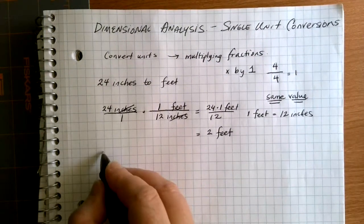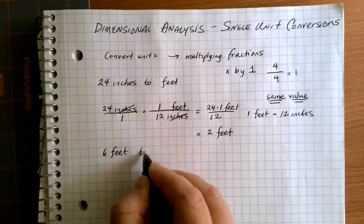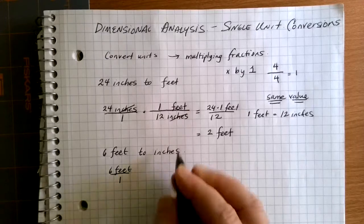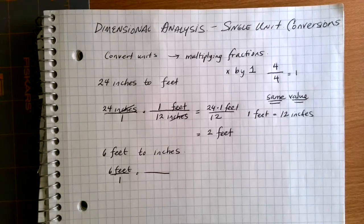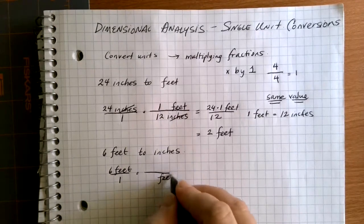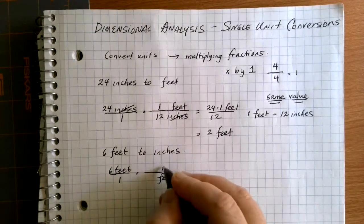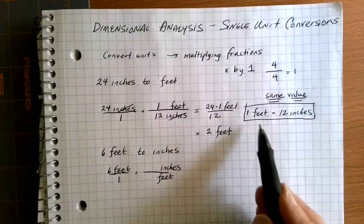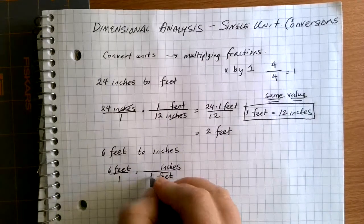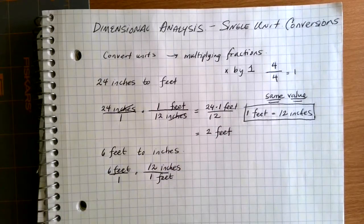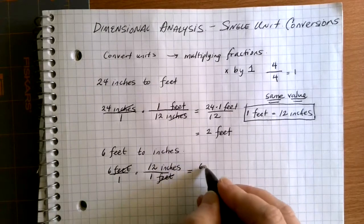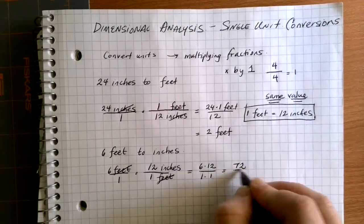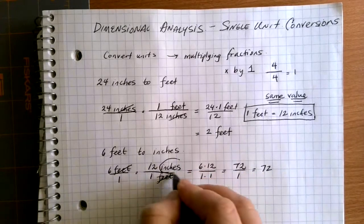The way we set things up is really important. Now let's suppose I have 6 feet and want to know how many inches that is — this time going the other direction. The setup is exactly the same: start with 6 feet over 1 as a fraction, then multiply by a clever conversion. The feet are on top and I want them to divide out, so I put feet on the bottom. Using the same equivalency — 1 foot equals 12 inches — the 1 goes on the bottom and the 12 goes on top. Dividing out the feet, I get 6 times 12 over 1, which is 72 inches.